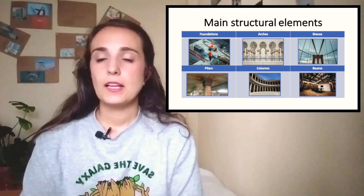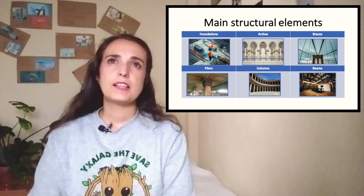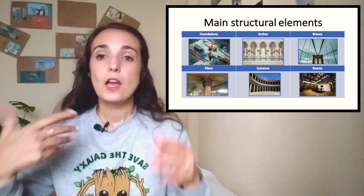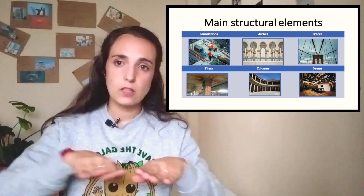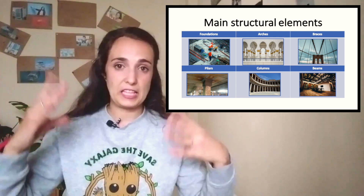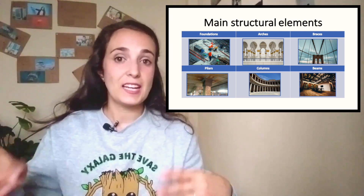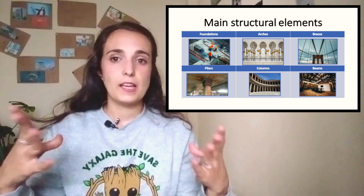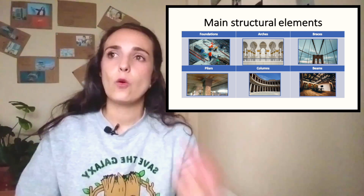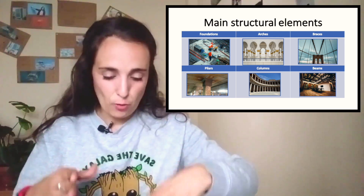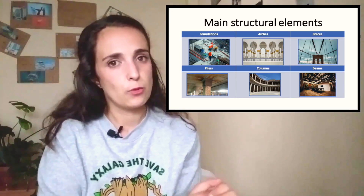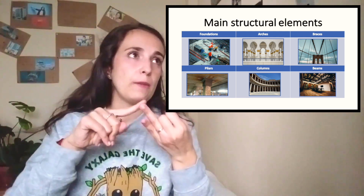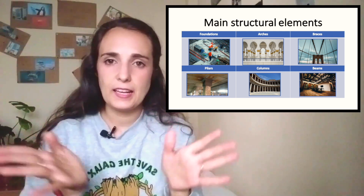The main structural elements are six types. First, foundations, which are the base that we build down before our structure, to make it stronger and more stable. If there is an earthquake, foundations make the building safe in those cases. Usually, when they start building, they dig into the floor, create the foundation, and then start building up. That first step of creating the foundation is critically important in any type of building, bridge, tunnel, or any kind of structure.